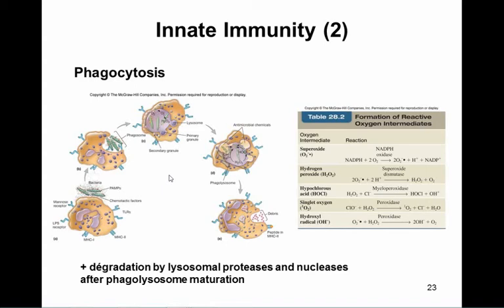If a bacterium has a capsule antigen around the outside, peptidoglycan and LPS are hidden by the capsule, so TLR2 and TLR4 will not be activated. This also reduces complement activation and binding of the mannose receptor. For encapsulated bacteria, phagocytic capacity becomes dependent on specific recognition of the capsule antigen by antibodies, which will not be present during the early stages of infection — only appearing after two or three weeks.